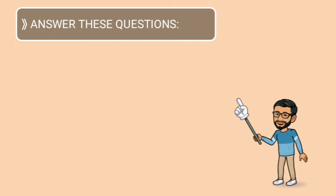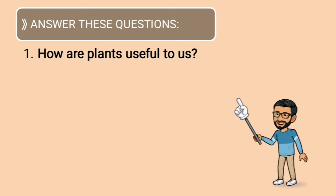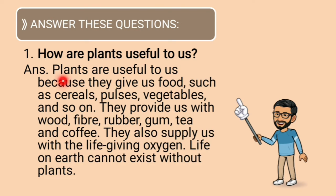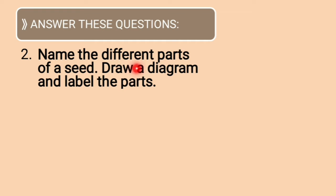Long answers: How are plants useful to us? Plants are useful to us because they give us food such as cereals, pulses, and vegetables. They provide us with wood, fiber, rubber, gum, tea, and coffee. They also supply us with life-giving oxygen. Life on earth cannot exist without plants.